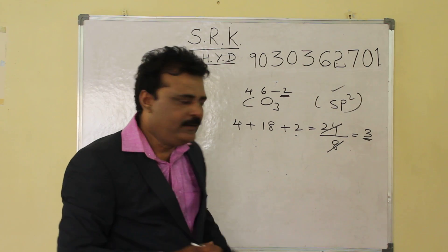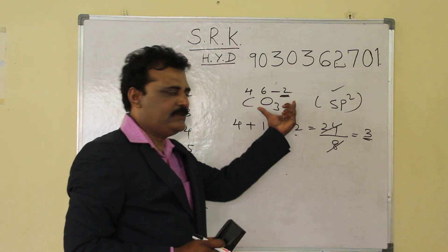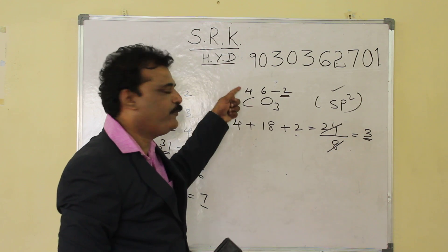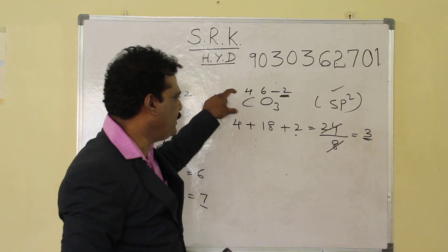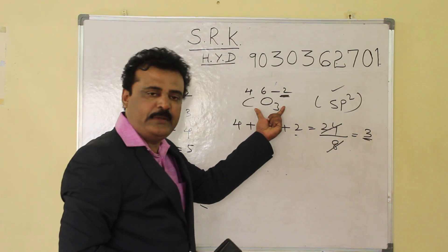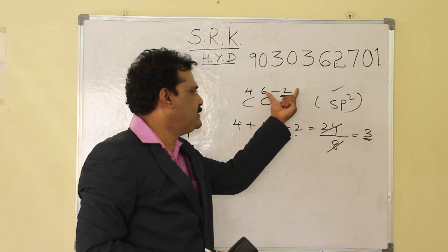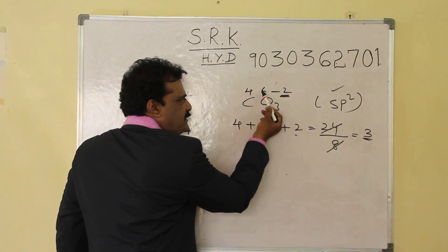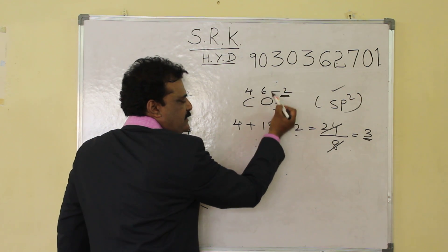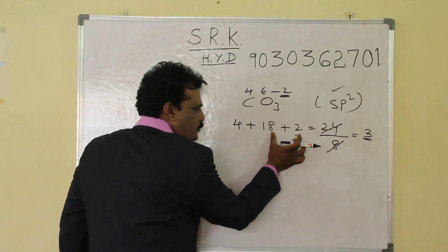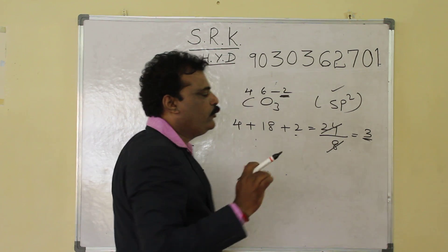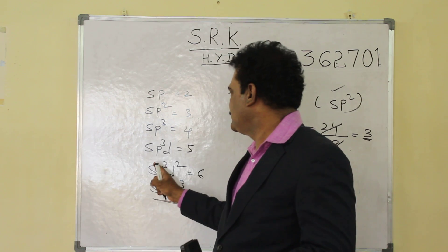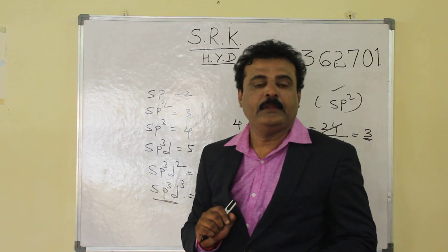For CO3²⁻ (carbonate ion): carbon belongs to the 4th group so I write 4, and oxygen belongs to the 6th group so I write 6. Minus 2 is the given charge. One four is 4, three sixes are 18, minus 2 means addition of two more electrons, total 24. 24 divided by 8 is 3, so the hybridization is SP2.